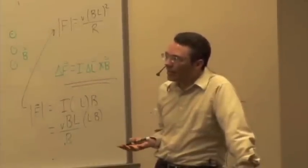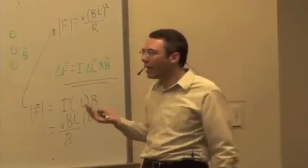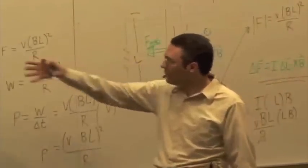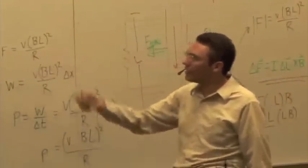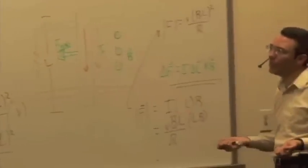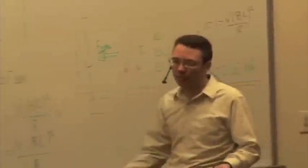The steady state says, again, power input's got to be equal to power output. And calculated two different ways. One by just looking at the work we're doing per unit time. The other by looking at how much energy the resistor is dissipating per unit time gives us the same result.